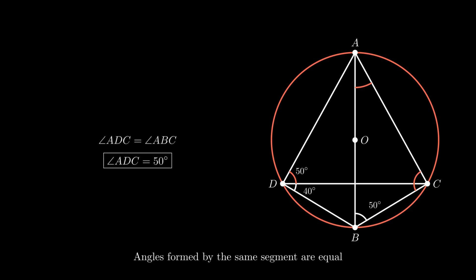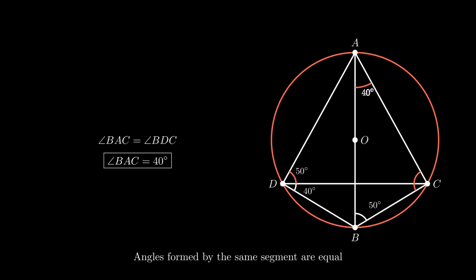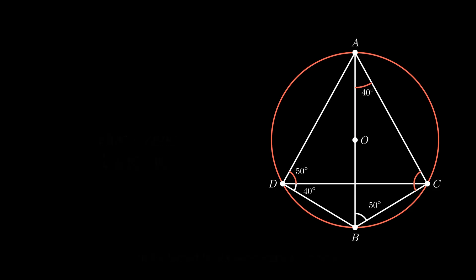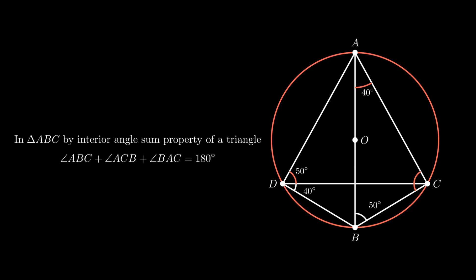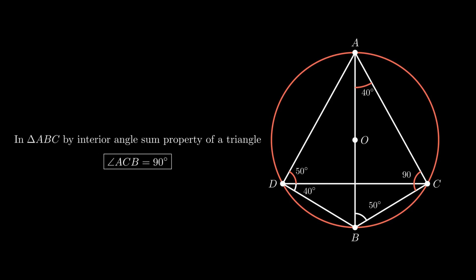Similarly, angle BAC and angle BDC are also formed on the same segment BC. Therefore, again by using the theorem that angles formed by the same segment are equal, the measure of angle BAC equals 40 degrees. For angle ACB, using the interior angle sum property of triangle ABC, the sum of 50 degrees, angle ACB and 40 degrees equals 180 degrees, which gives angle ACB equals 180 minus 90, which is equal to 90 degrees.